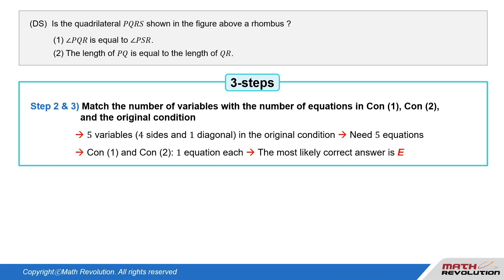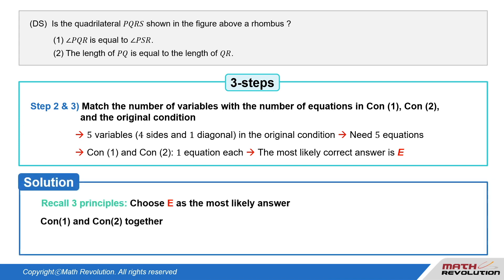A quadrilateral has five variables mentioned as above. To match the number of variables with the number of equations, we need five more equations. Since conditions 1 and 2 will provide one equation each, it's about 80% likely E is the answer. Recall three principles and choose E as the most likely answer.